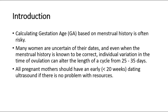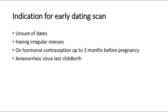All pregnant mothers should have an early dating ultrasound, earlier than 20 weeks, if there is no problem with resources. The indications for early dating scan are: unsure of dates, having irregular menses, on hormonal contraception up to 3 months before pregnancy, or amenorrheic since last childbirth.